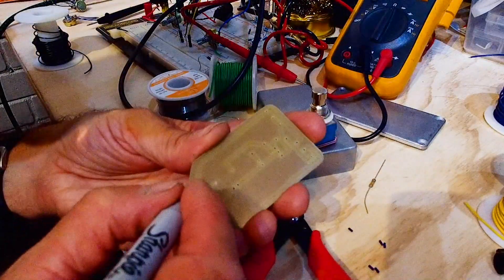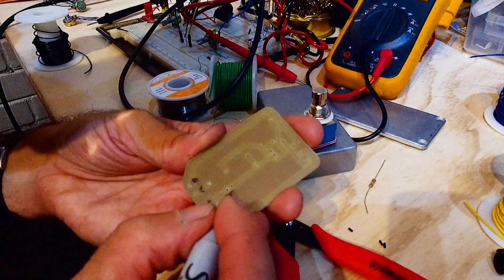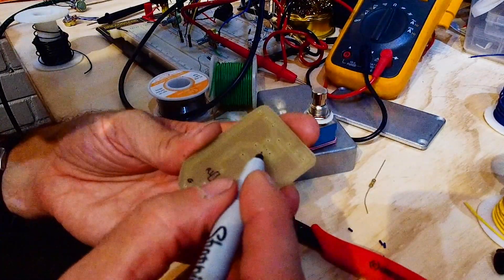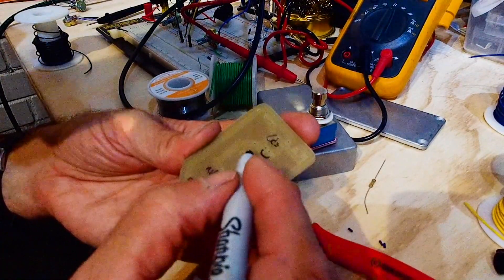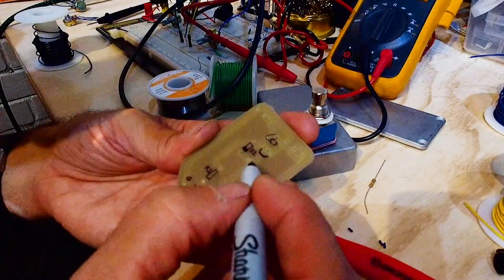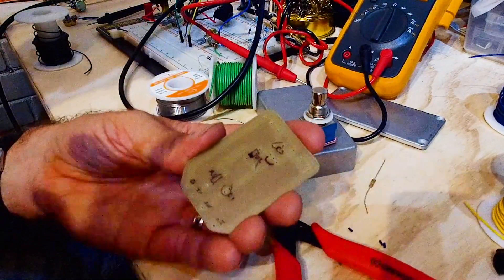Now just so I don't make any mistakes, I'm labeling out where all the components go. And now we're putting all the stuff on the circuit board.